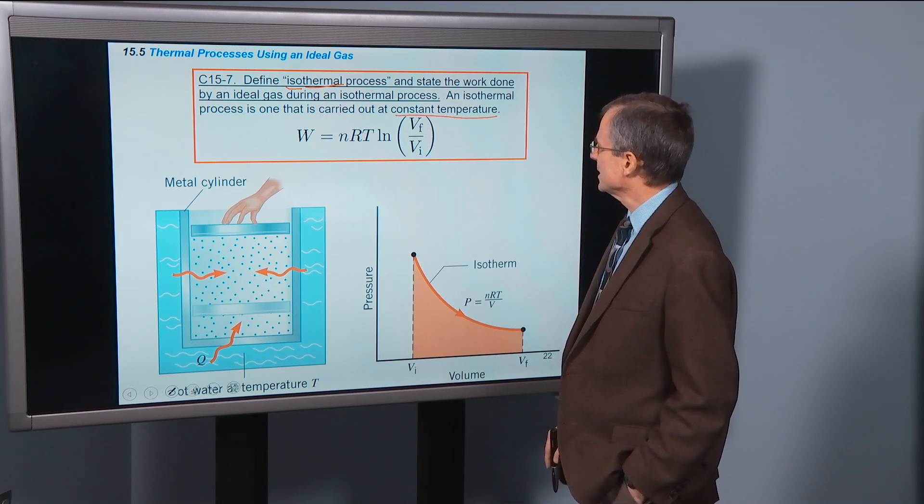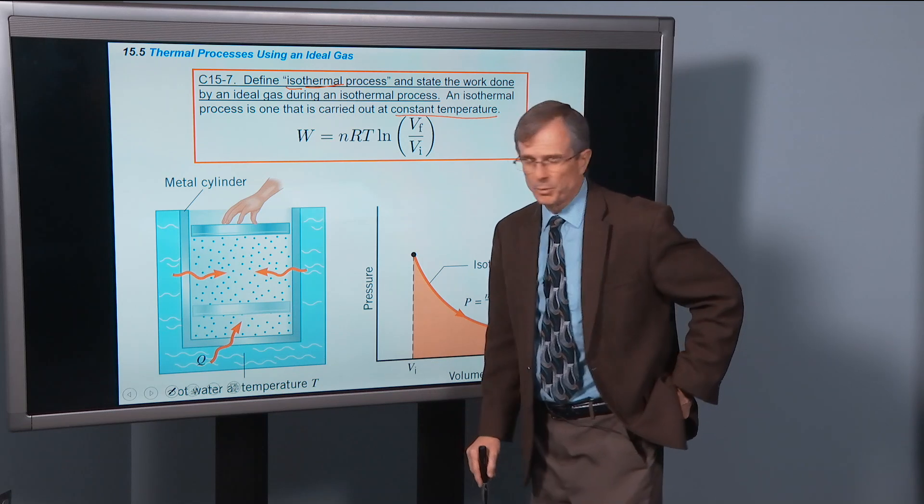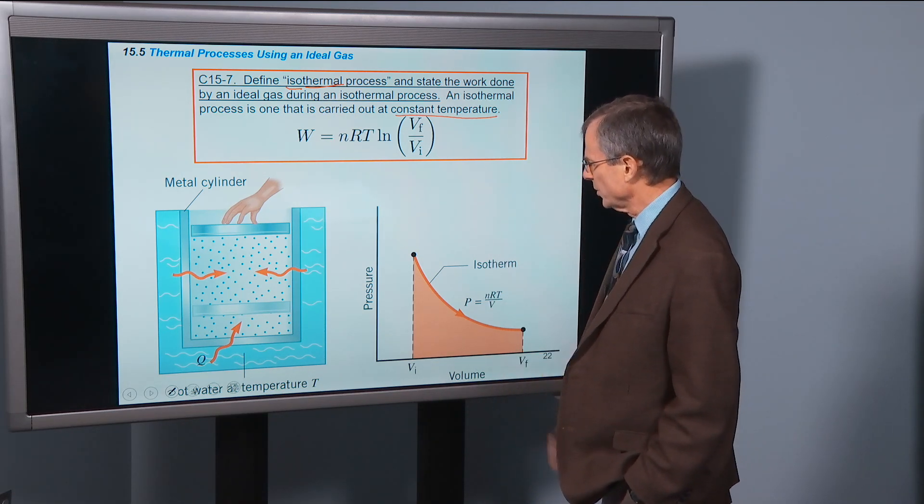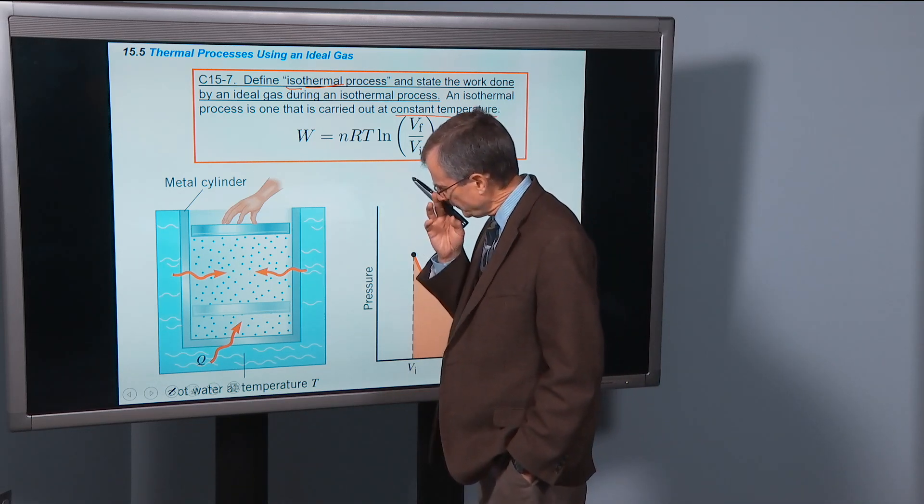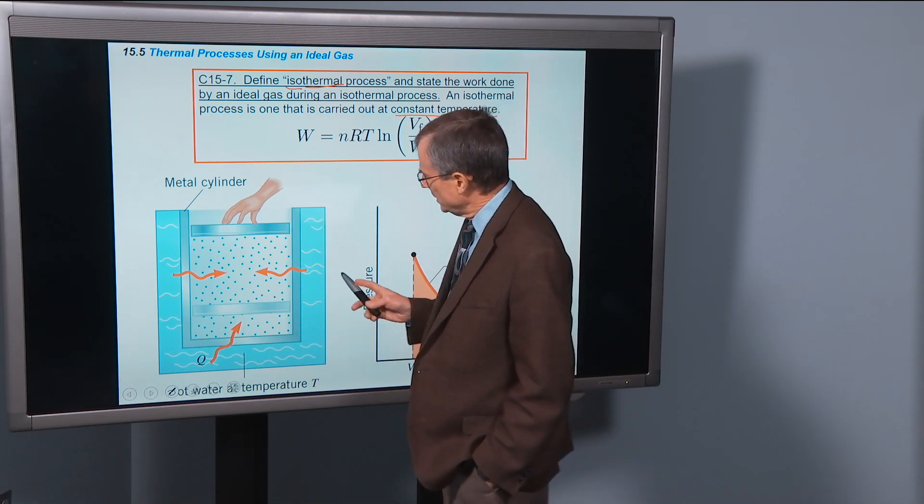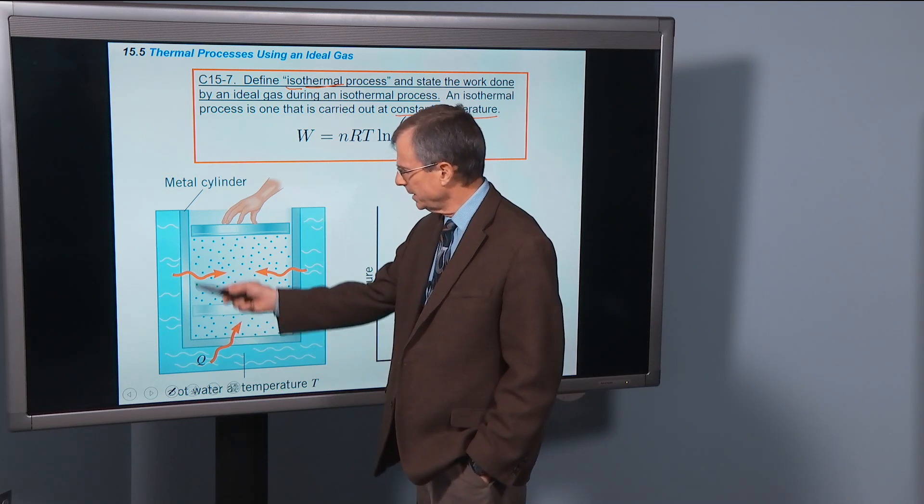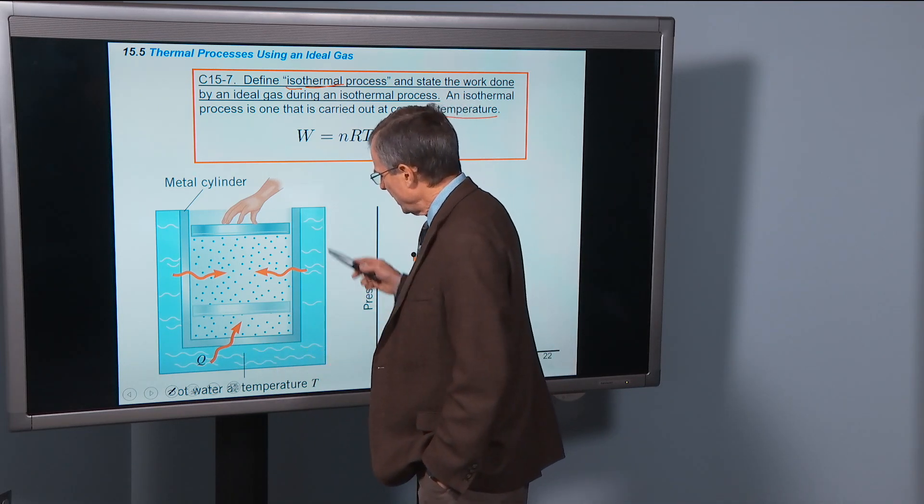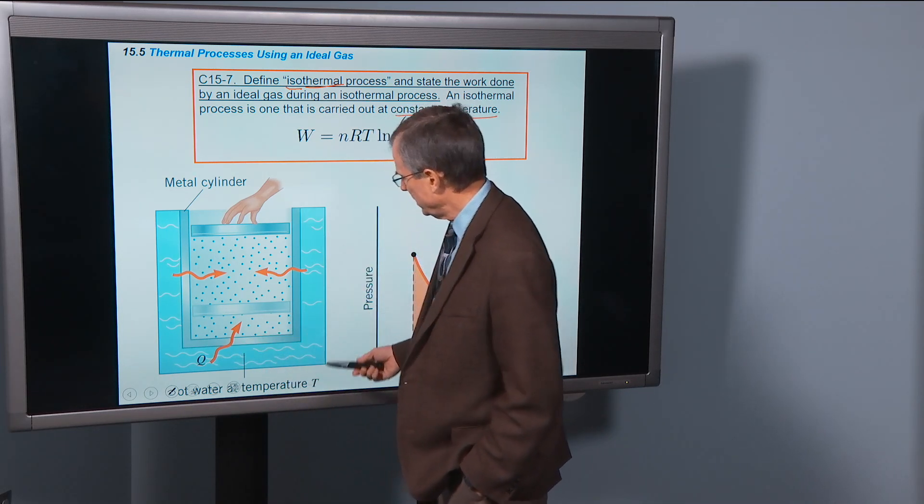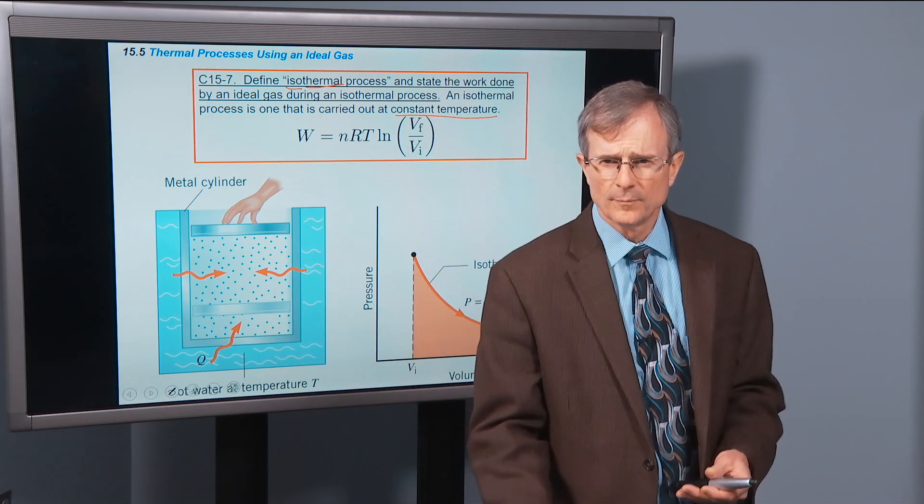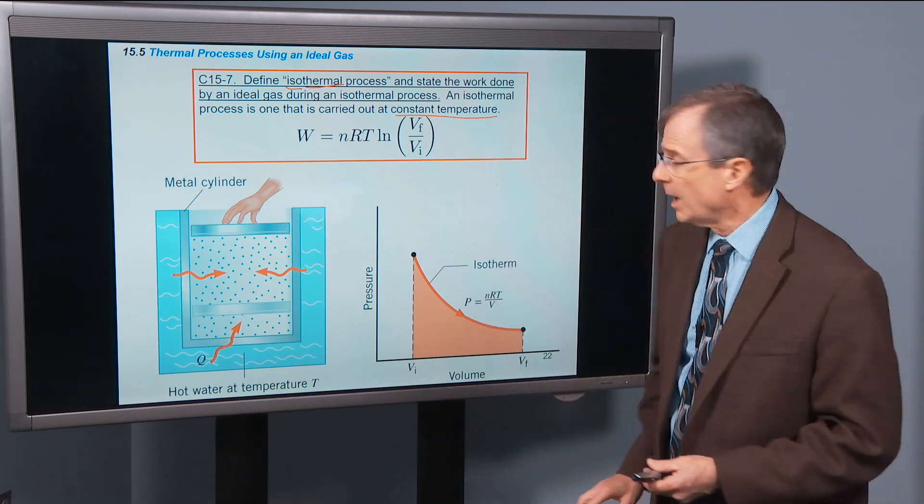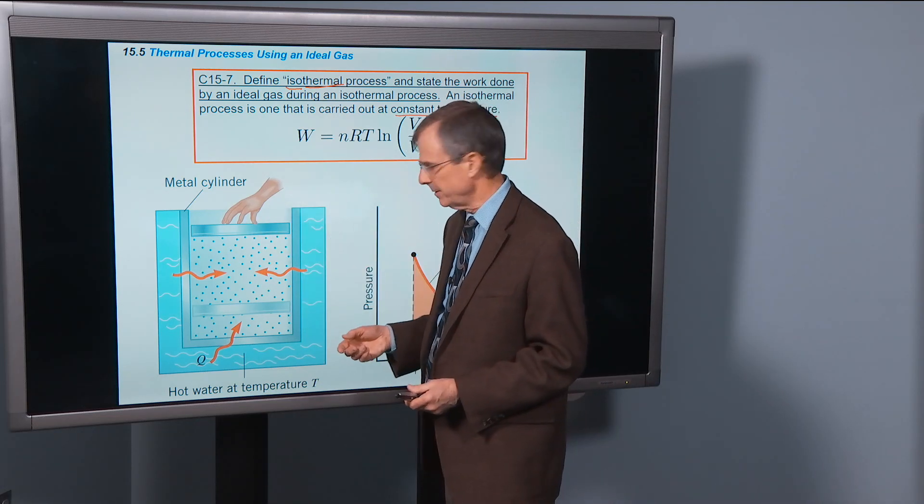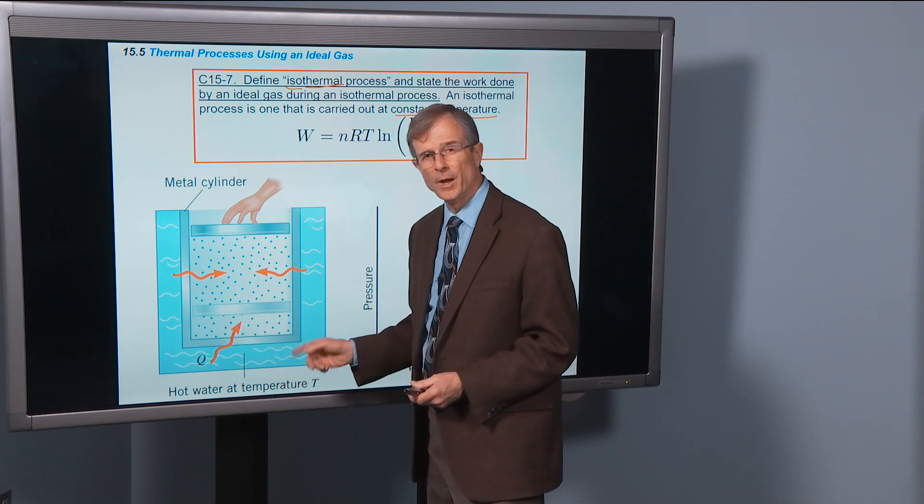We're supposed to state the work done by an ideal gas during an isothermal process. What is an isothermal process anyway? If you take a metal container, metals are good thermal conductors. And then you put it in hot water at a particular temperature, and you keep that hot water flowing around this container and maintain that temperature of the hot water.